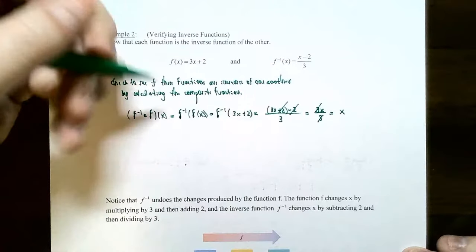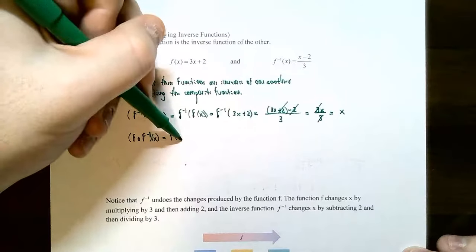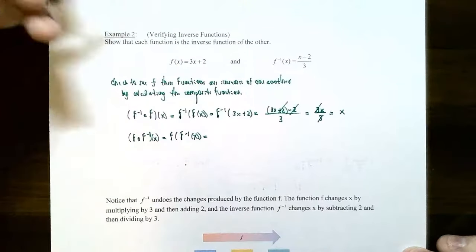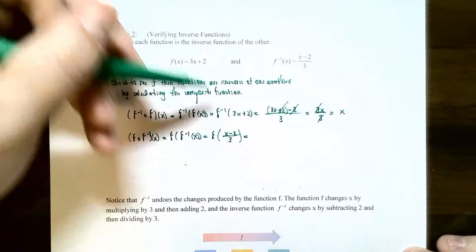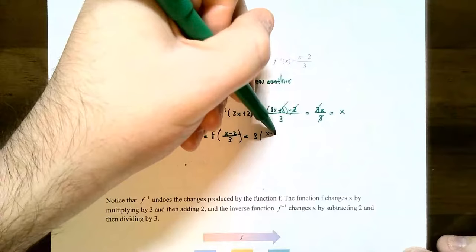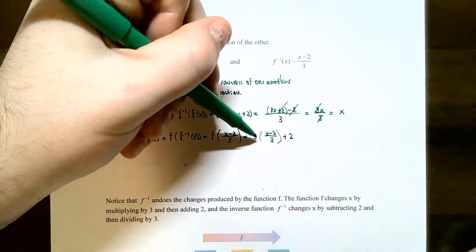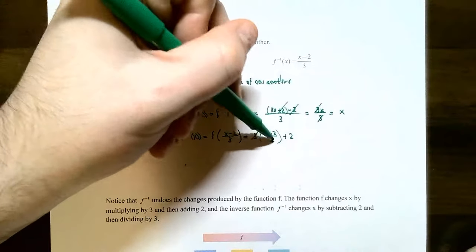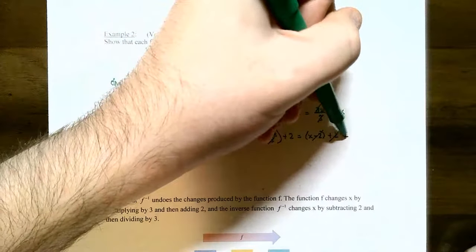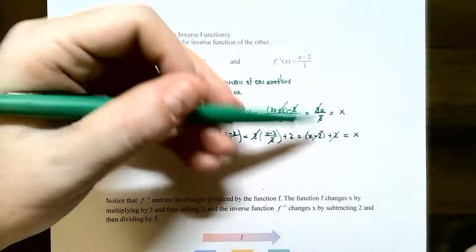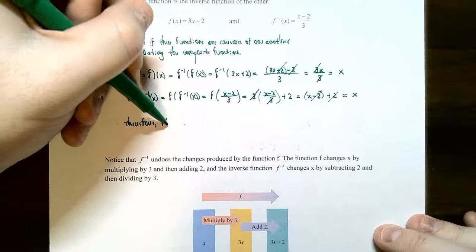We'll also show it with the other composition just to be safe. For f of f inverse of x, we take the inverse function x minus 2 divided by 3 and plug it into f. So 3 times (x minus 2 divided by 3) plus 2. Multiplying by 3 and dividing by 3 undo each other, giving x minus 2 plus 2. The minus 2 and plus 2 undo each other, and you get x. Therefore, f of x and g of x are inverse functions of one another.